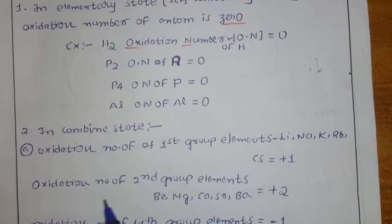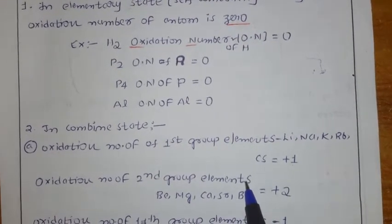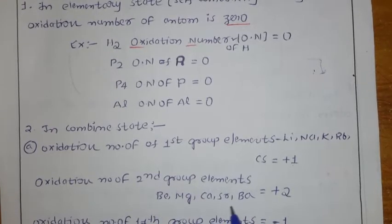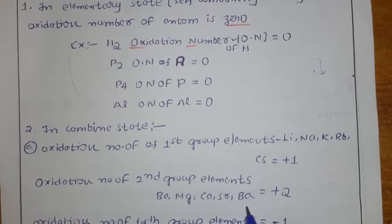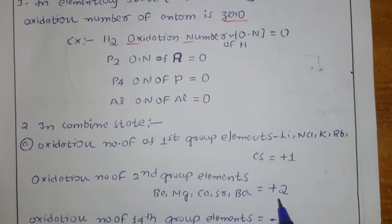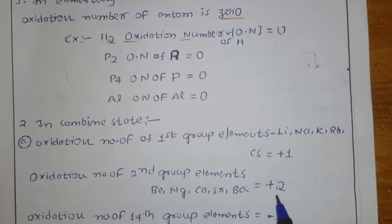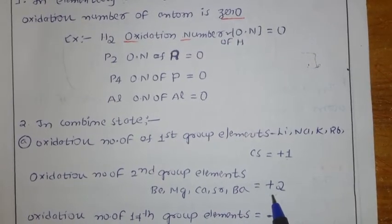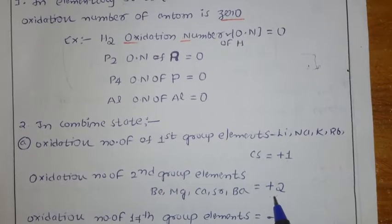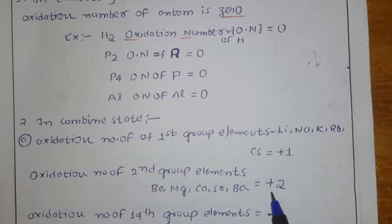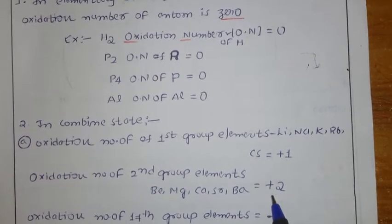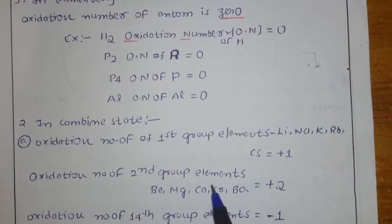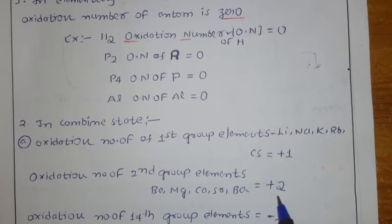Next, the oxidation number of second group elements — beryllium, magnesium, calcium, strontium, barium — the common oxidation number is plus 2. This is because they have 2 excess electrons to lose to get the noble gas configuration. So the general oxidation state of second group elements is plus 2.